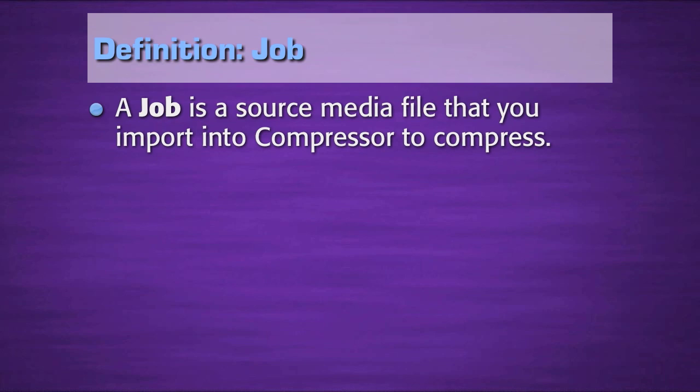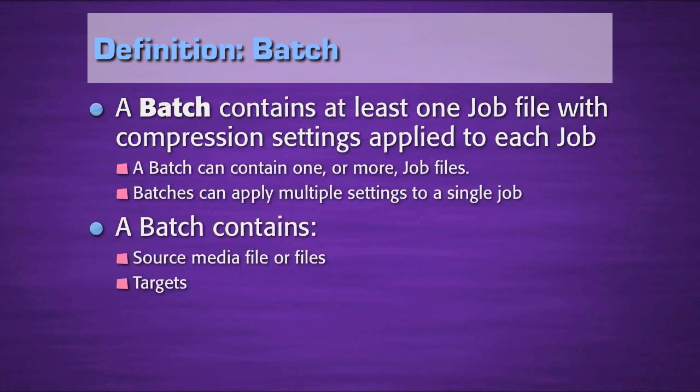A job is a source media file that you import into Compressor to compress — one file equals one job. A batch contains at least one job file with compression settings applied to each job. A job is a source media file; a batch is that source media file to which settings have been applied. A batch can contain one or more job files, and batches can apply multiple settings to a single job. Therefore, a batch that's ready for compression contains both the source media file or files and targets.